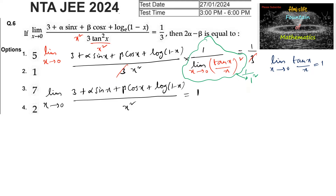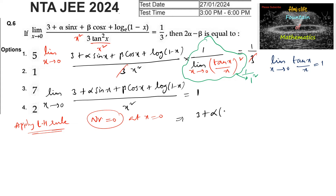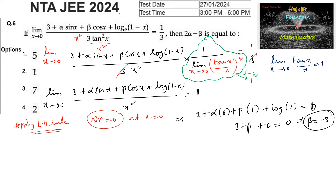Since the limit value is defined and the denominator is 0 at x = 0, the numerator must also equal 0 for L'Hôpital's rule to apply. So: 3 + α·sin(0) + β·cos(0) + log(1 - 0) = 0, which gives 3 + β + 0 = 0, since log(1) = 0. Therefore β = -3.